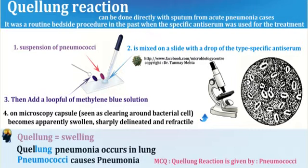How to remember this? As you can see, in the spelling of Coelan there is 'lung' — Coel-lung. And you know that pneumonia occurs in the lung and pneumococci causes pneumonia very frequently. That's why Coelan reaction is given by pneumococci.